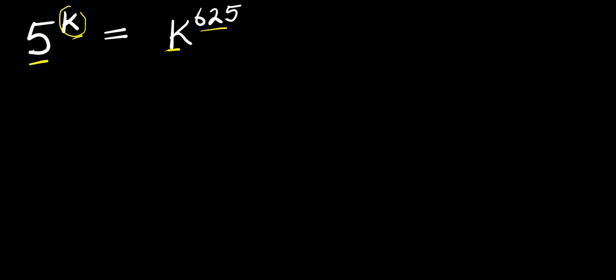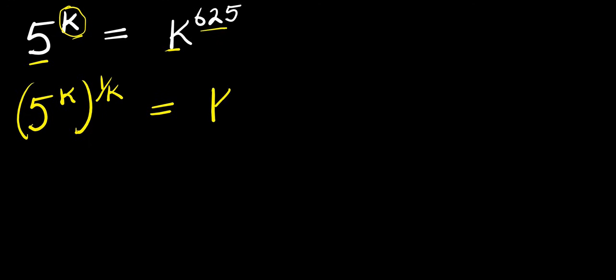we can start by eliminating the k at the exponent. To achieve that, I multiply this exponent by 1 over k. So 5 to the power of k, raised to the power of 1 over k, equals k to the power of 6/5, and this is raised to the power of 1 over k.